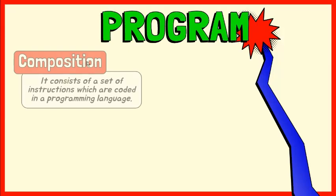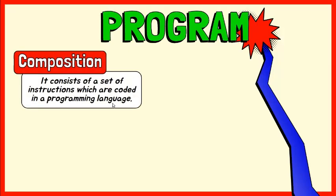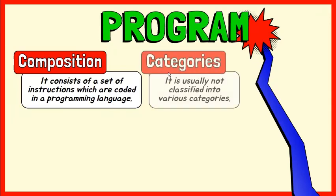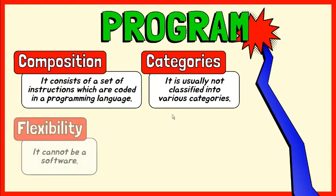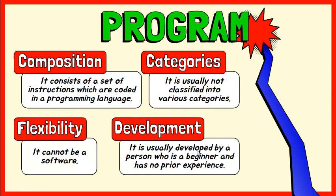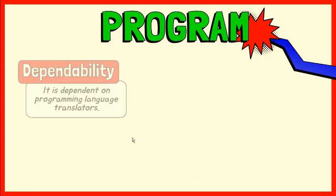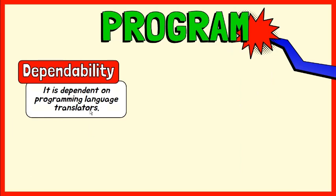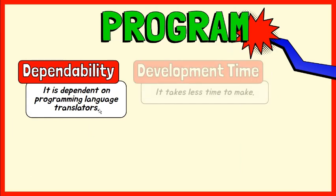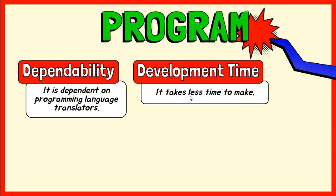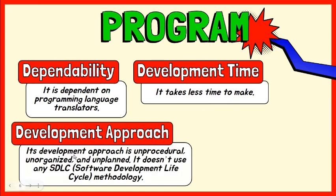When we talk about a program, it consists of a set of instructions which are coded in a programming language like C, C++, PHP, Java, etc. A program usually can't be classified into various categories. A program cannot be software. It is usually developed by a person who is a beginner and has no prior experience. Its functionality is dependent on programming language translators, which are compiler, interpreter, and assembler. A program takes less time to make. Its development approach is unprocedural, unorganized, and unplanned.